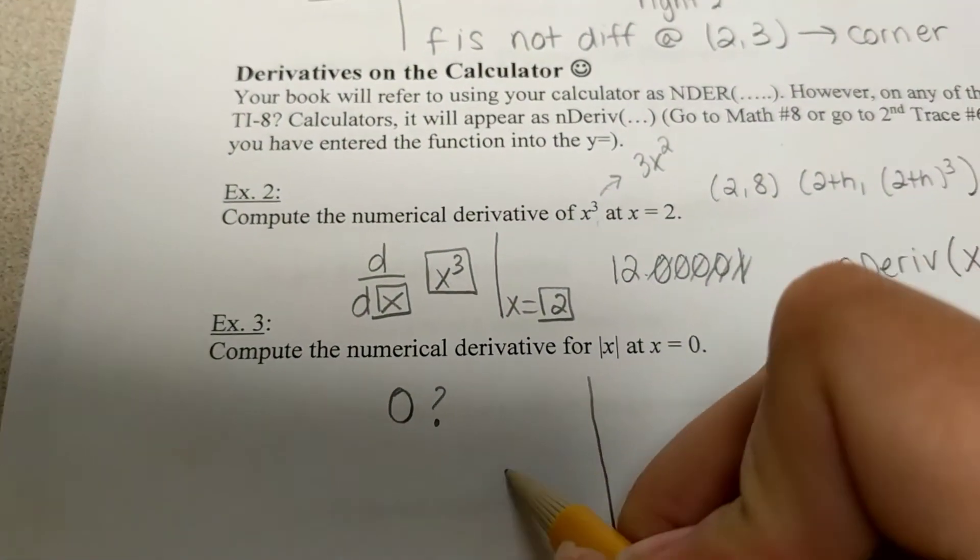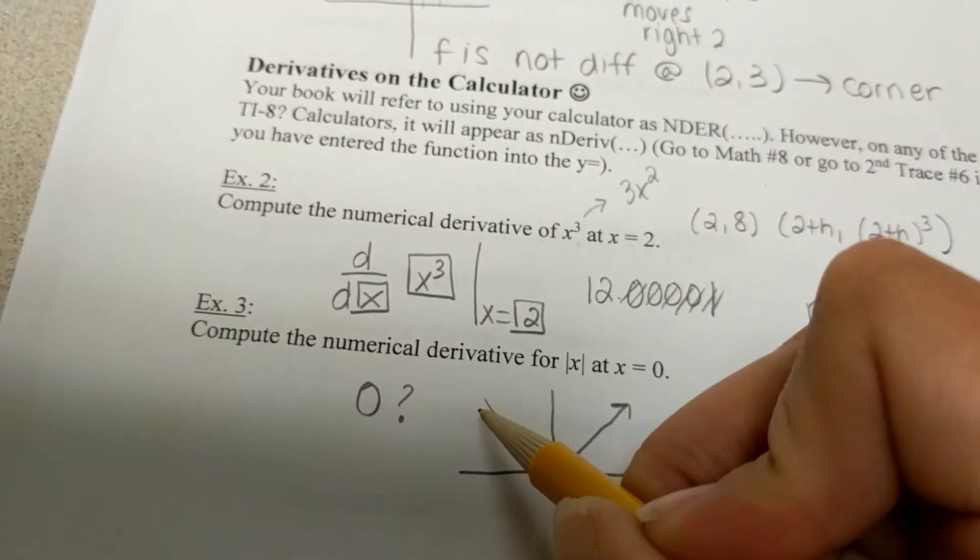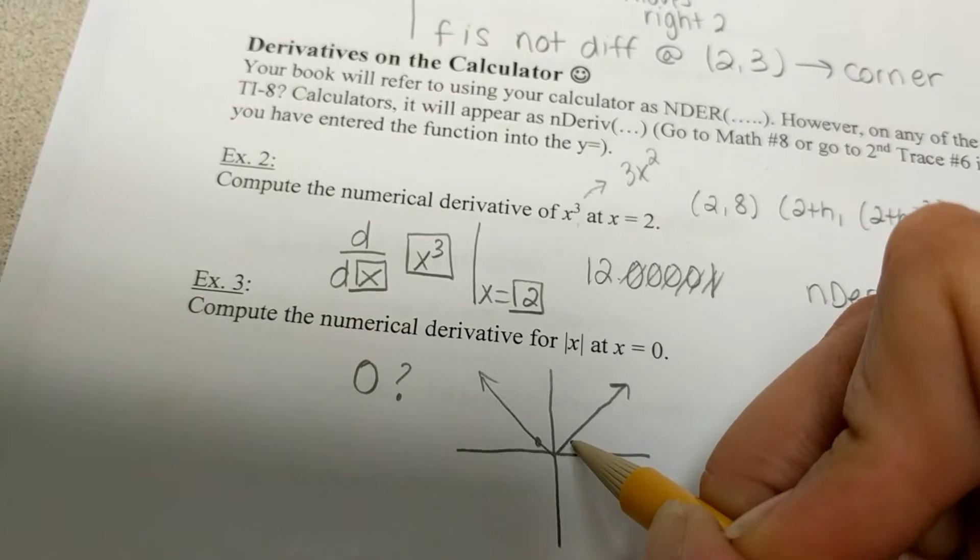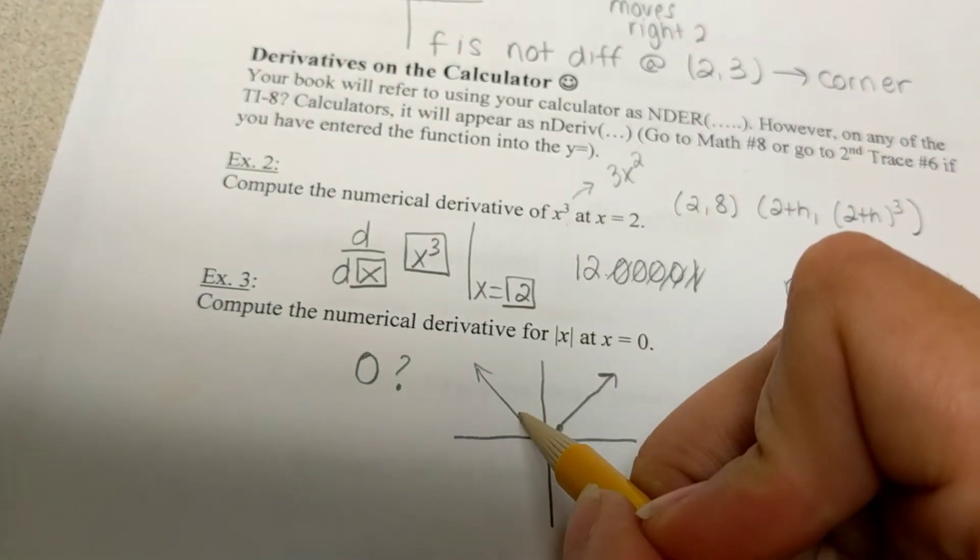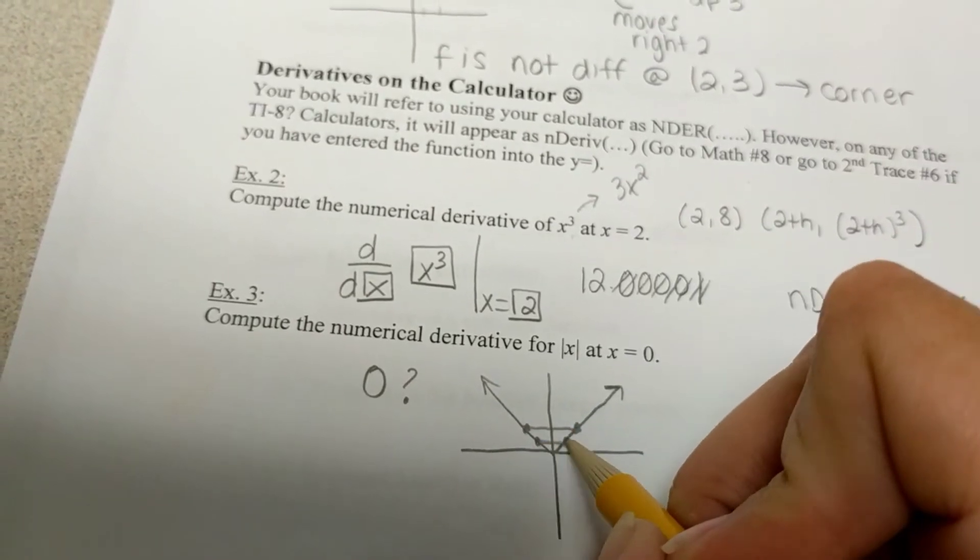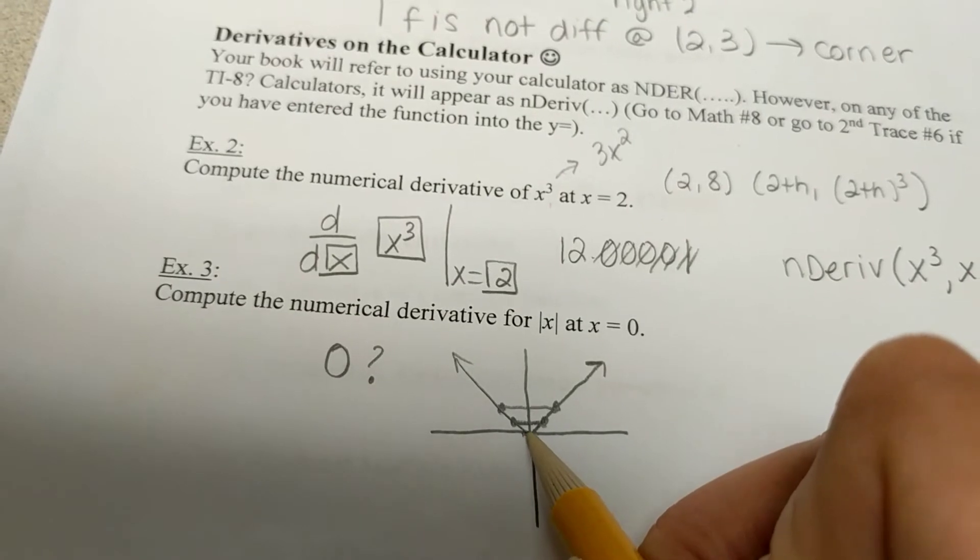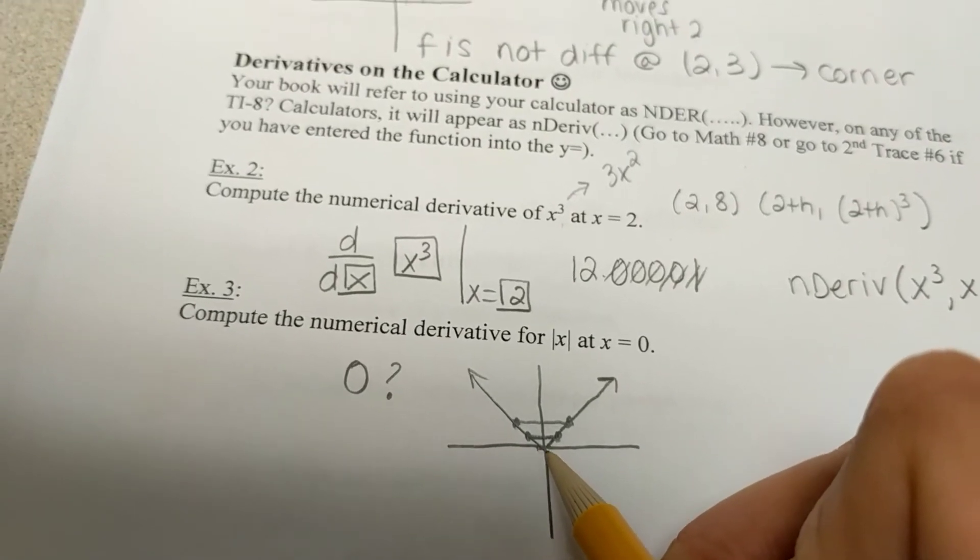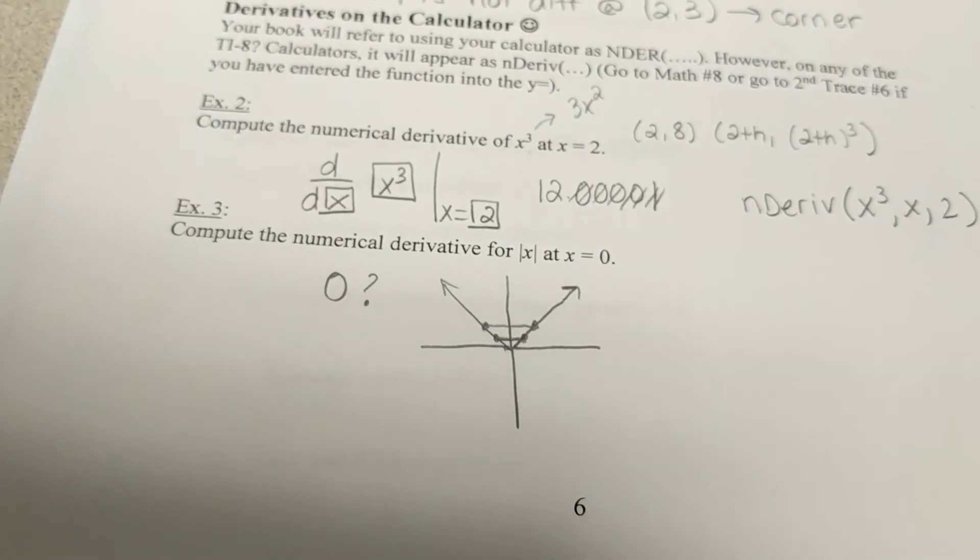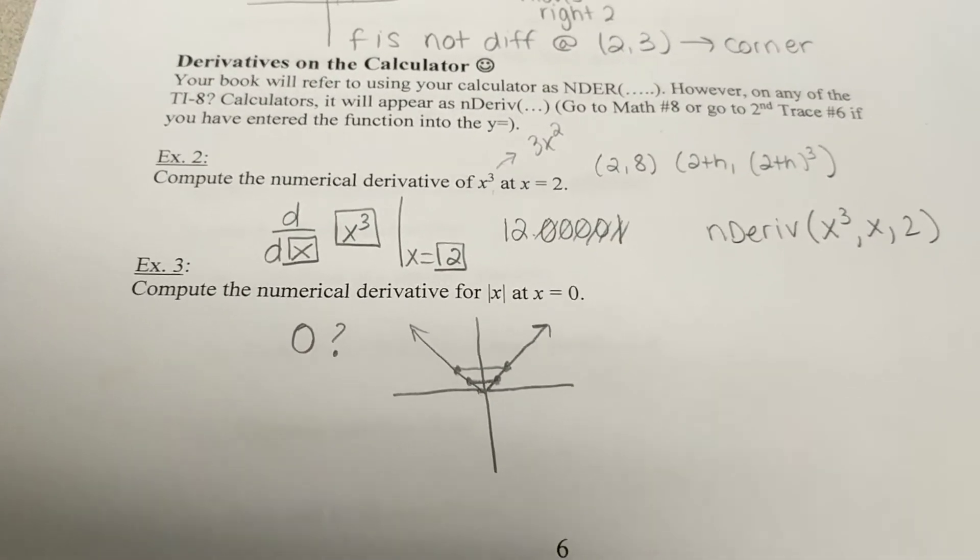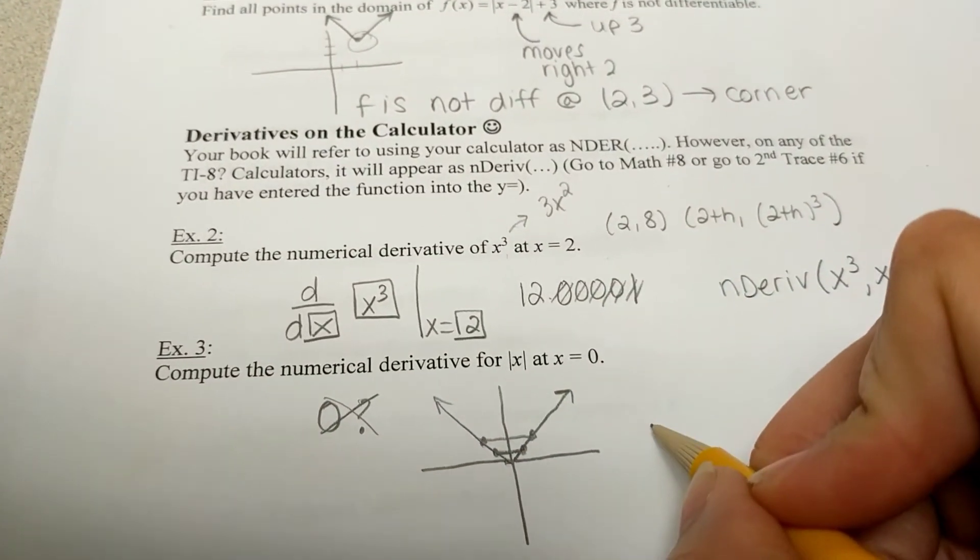So, what your calculator just did is it took this absolute value graph and it took a point here and it took a point here and it connects them. And it finds the slope. And it takes a point here and takes a point here and connects them and finds the slope. And guess what? It's going to keep getting closer and closer to 0, but it can never really get to 0. So, the slope of all of those lines is, in fact, 0. However, we need to, again, be smarter than our calculator and realize that the slope does not exist.